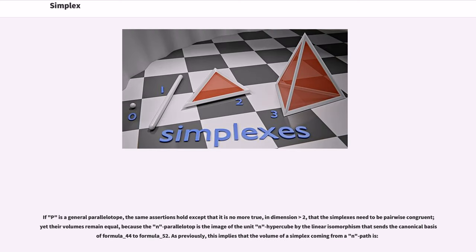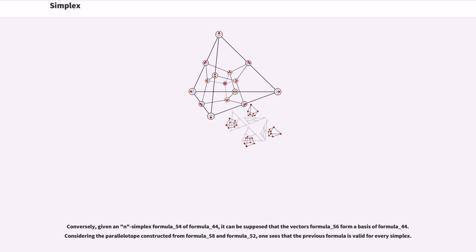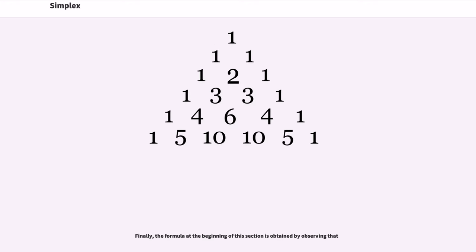If P is a general parallelotope, the same assertions hold except that it is no more true, in dimension greater than 2, that the simplexes need to be pairwise congruent, yet their volumes remain equal, because the n parallelotope is the image of the unit n hypercube by the linear isomorphism that sends the canonical basis of R^n to the basis. As previously, this implies that the volume of a simplex coming from an n path is the volume of P divided by n!. Conversely, given an n simplex of R^n, it can be supposed that the vectors form a basis of R^n. Considering the parallelotope constructed from these vectors, one sees that the previous formula is valid for every simplex. Finally, the formula at the beginning of this section is obtained by observing the relationship.